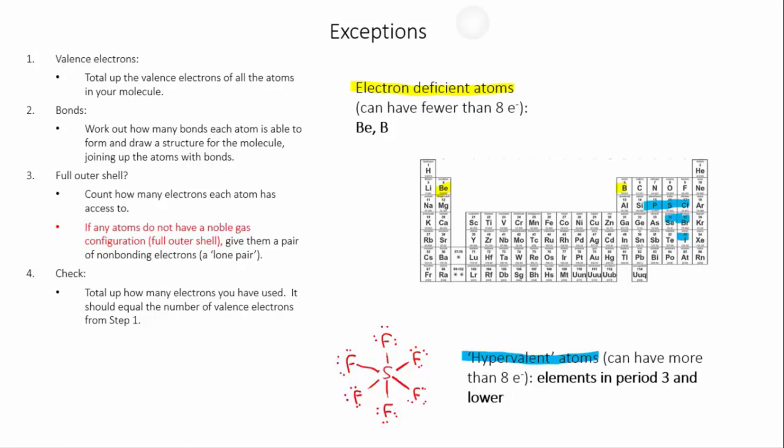So those are our main exceptions. What this means is that there's actually a relatively limited number of atoms where you need to be strict about them having an exactly full outer shell.